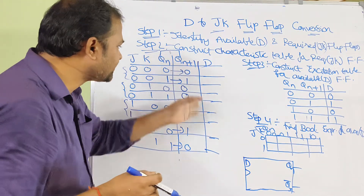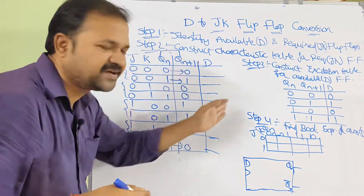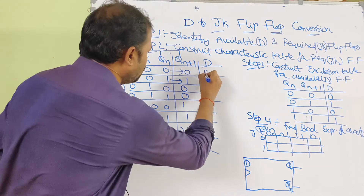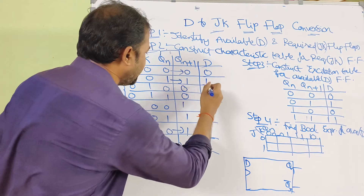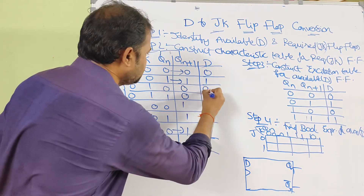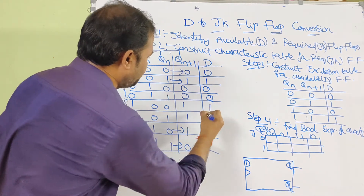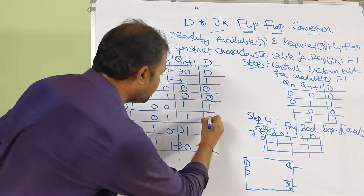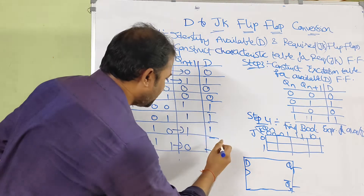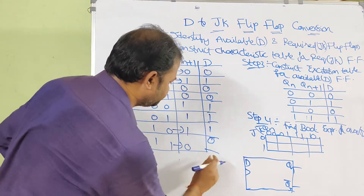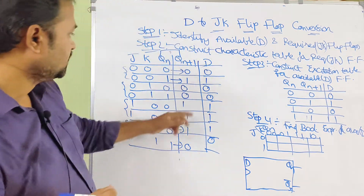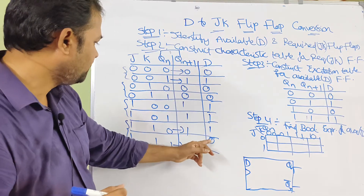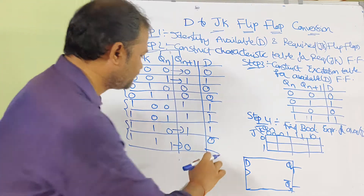So we simply write the Qn+1 column one more time as the D column: 0, 1, 0, 0, 1, 0, 1, 0, 1.